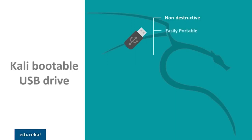Secondly, it's portable. You can carry Kali Linux in your pocket and run it whenever you want in just a few minutes. It's also customizable — you can create your own Kali Linux ISO image and put it into a USB drive using a simple procedure which we will discuss later. And lastly, it's potentially persistent. You can configure your Kali Linux live USB drive to have persistent storage so that the data you collect is saved and can be used across different reboots.